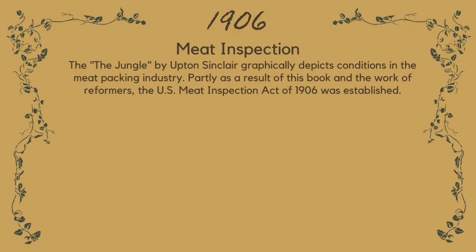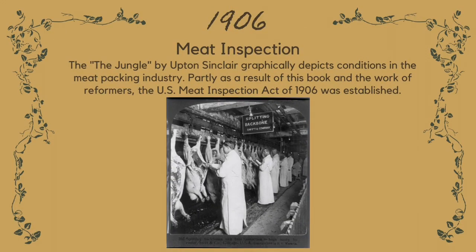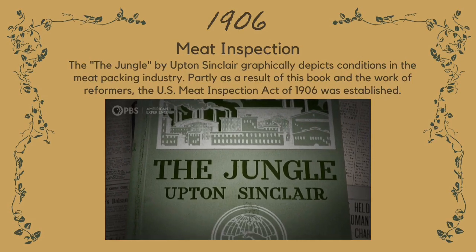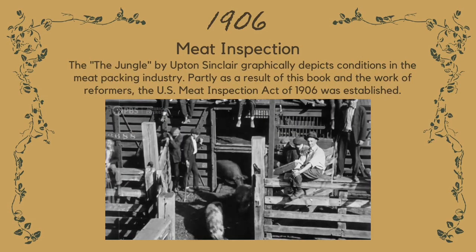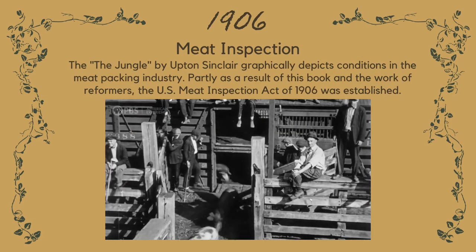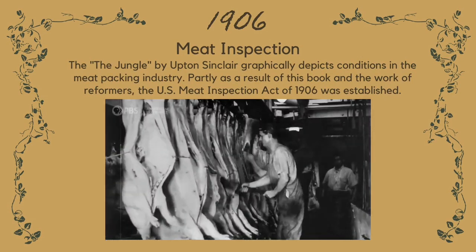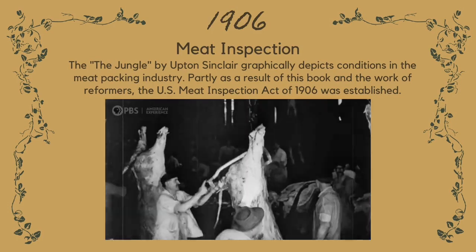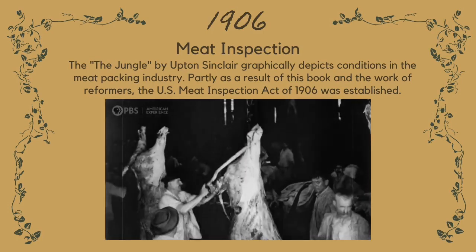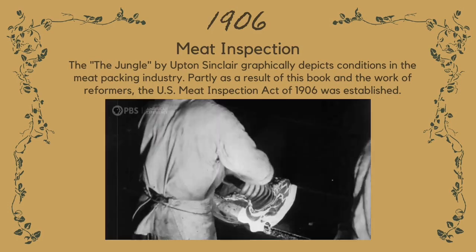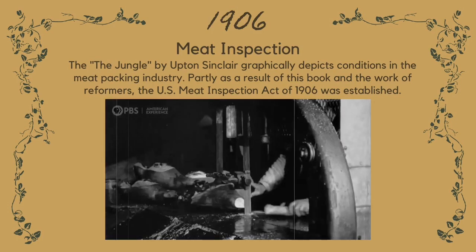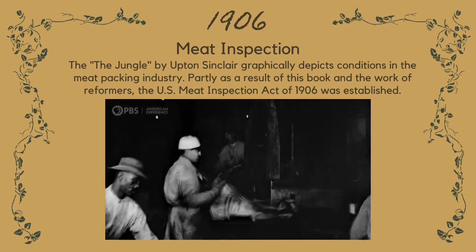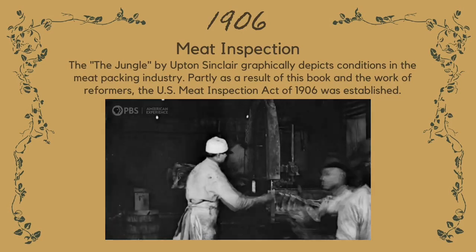1906 — Meat Inspection. The Jungle by Upton Sinclair graphically depicted conditions in the meat packing industry. Partly as a result of this book and the work of reformers, the U.S. Meat Inspection Act of 1906 was established.